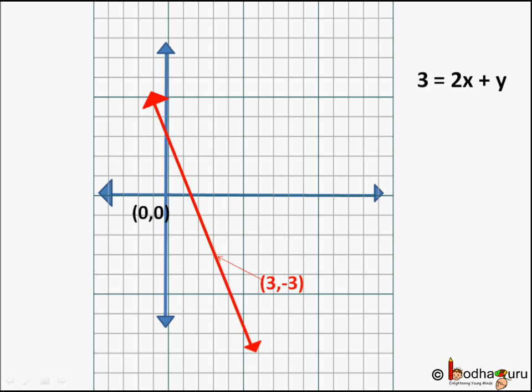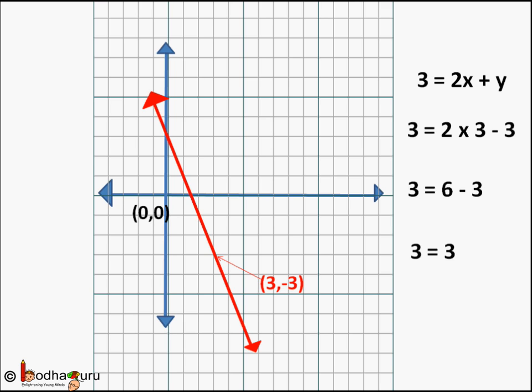Point (3, -3) is also on the line. If we put x = 3 and y = -3 in the equation, we get 3 = 2 × 3 - 3, which is 3 = 6 - 3, so 3 = 3. Point (3, -3) also satisfies this equation.